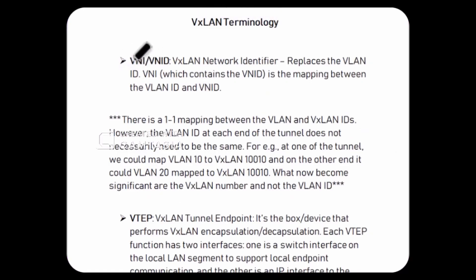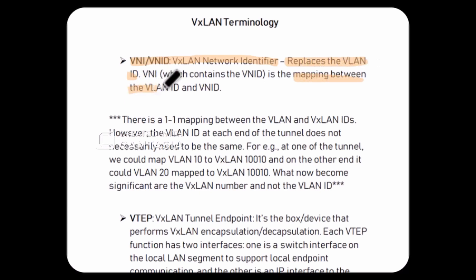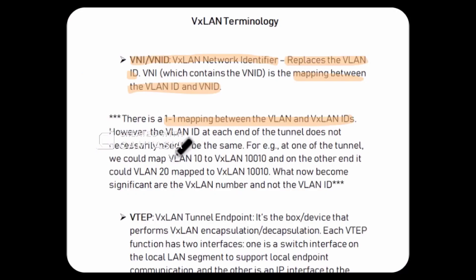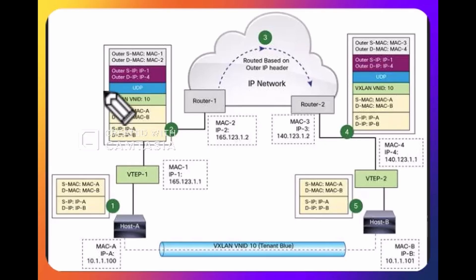Sabse pehla term jo hum discuss karenge woh hai VNI ya VNID, which stands for VXLAN Network Identifier. VXLAN network mein hum VLAN ID ko VNI ya VNID se replace karte hain. Ye ek mapping hai between the VLAN ID and the VNID, aur ye mapping one-to-one basis pe hoti hai. Lekin yahan pe important factor ye hai ki VLAN ID does not need to match at both ends of the tunnel. Example ke tor pe, agar hum ek end pe VLAN 10 ko VXLAN 10010 se map karein aur doosre end pe VLAN 20 ko map karein VXLAN 10010 se, toh bhi woh kaam karega. Toh what now becomes significant is the VXLAN number and not the VLAN ID.